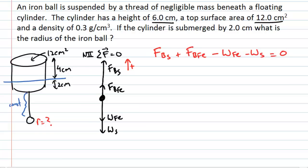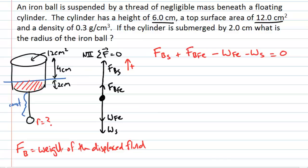Let's remind ourselves what the buoyant force is. The buoyant force is given by the weight of the displaced fluid. Since weight equals mass times gravity, and mass equals density times volume, the buoyant force of the styrofoam equals the density of the fluid (water) times the volume of the styrofoam that is displaced, times gravity. So rho times V times g gives us the weight force.